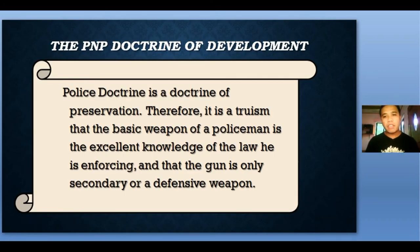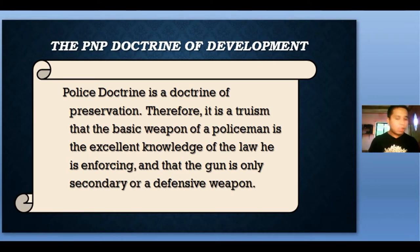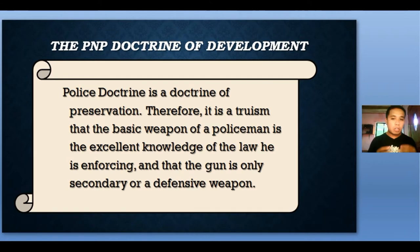The PNP Doctrine of Development is a Doctrine of Preservation. The basic weapon of a policeman is excellent knowledge of the law he is enforcing, and the gun is only secondary or a defensive weapon. An ordinary policeman is expected to be a one-man staff — an operator, fiscalizer, and prosecutor in a court of law. He is also expected to behave civilly as a modern citizen of his community and a protector of human rights. The firearm is for necessary protection in the performance of police duties, but it shall never be used to spread violence in the community.